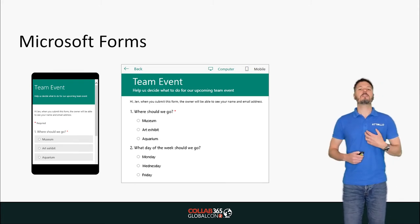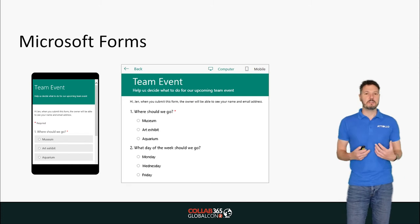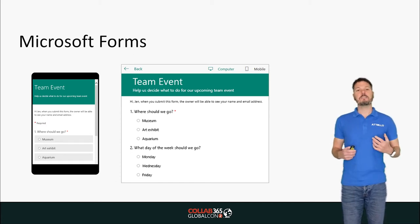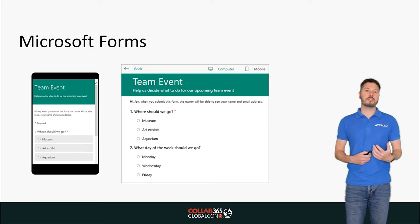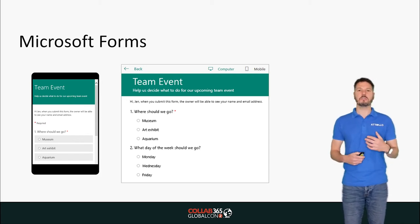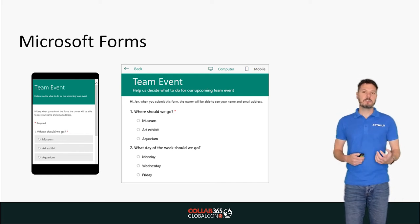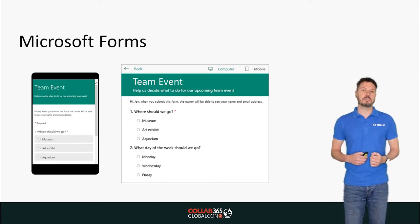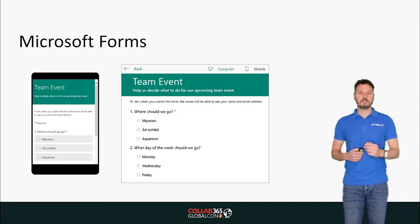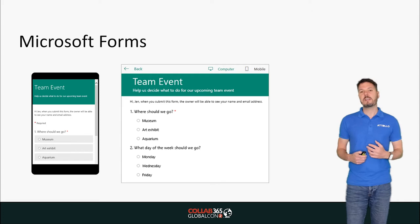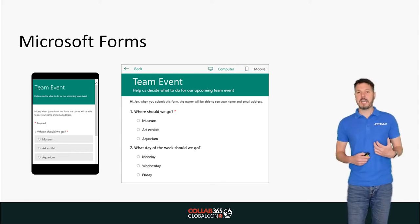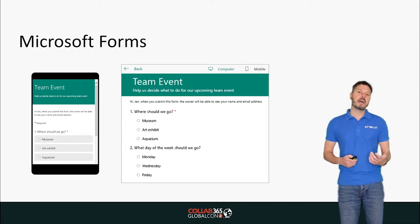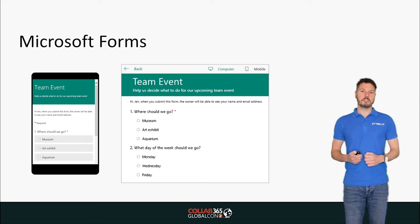Microsoft Forms is coming in to slightly replace InfoPath — though not entirely. It gives us the ability to create short forms, surveys, and quizzes to capture feedback from users, with question types like multiple choice, grids, and text. We can share these within the business or anonymously on the internet. It comes in two flavours: standard Forms and Forms Pro, a paid version with better sharing capabilities and analytics. For most cases, normal Forms is sufficient.